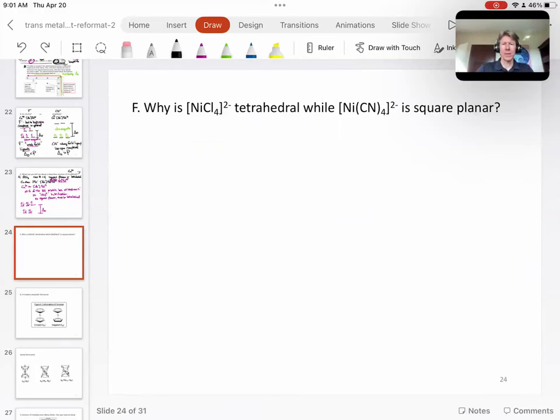Now, let's talk about why is nickel with four chloride ligands tetrahedral, while nickel with four cyanide ligands is square planar.